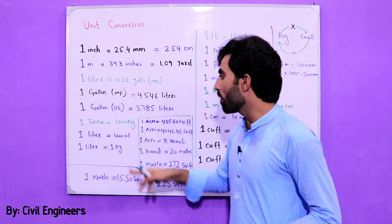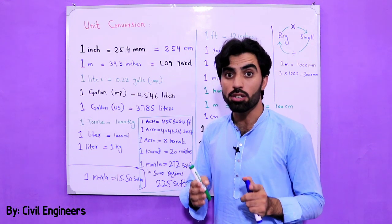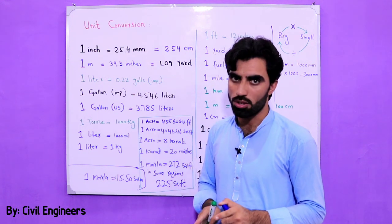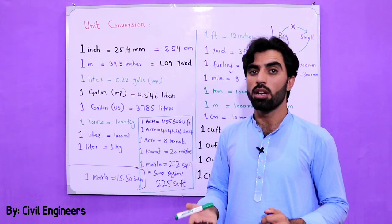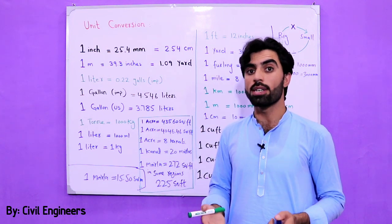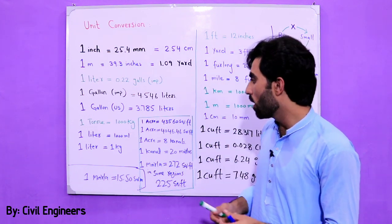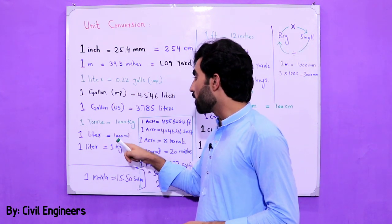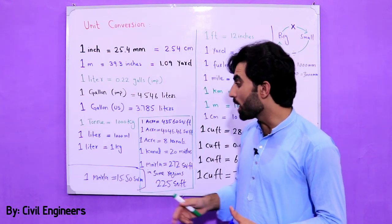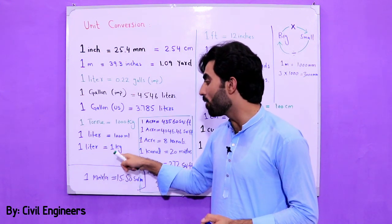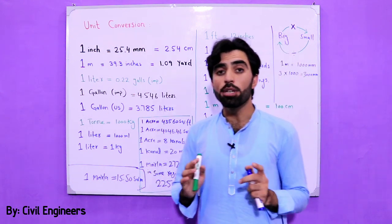Now guys, one ton is equal to 1,000 kg. Sometimes we say we need one ton or two tons of steel — so in one ton we have 1,000 kg. In one liter we have 1,000 ml, and one liter is equal to one kg.